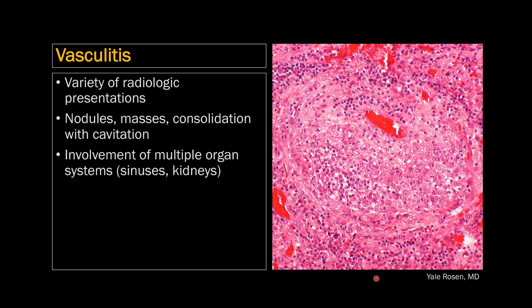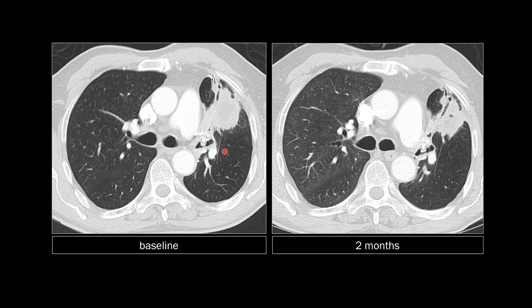V stands for vasculitis. There are a variety of vasculitides that affect the lung, divided into large and small vessel vasculitis. The most common small vessel vasculitis affecting the lung is GPA — granulomatosis with polyangiitis. The appearance of GPA is nodules, masses, and consolidation, frequently with cavitation. Despite the varied appearances, involvement of multiple organ systems — lungs, sinuses, and kidneys — should make you think of vasculitis. Here's a patient who had a lung resection with consolidation along the staple line suspicious for cancer, which two months later was smaller with cavitation — consistent with GPA.